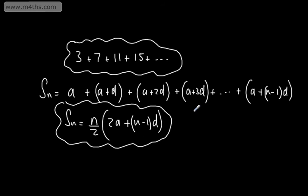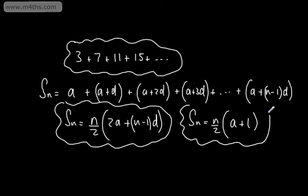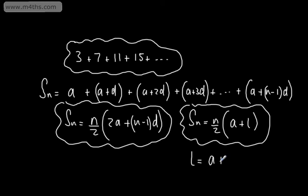Sometimes we might use the formula: S_n is equal to n over 2 times (a plus l), where a is the first term and l is the last term, or the nth term. We know the nth term l is given as a plus (n minus 1)d, so we can see the connection between the two.